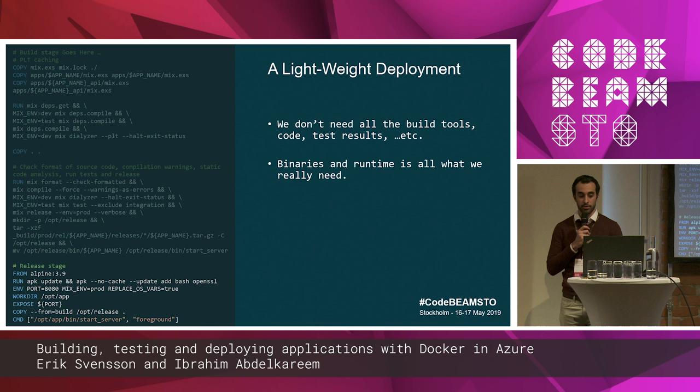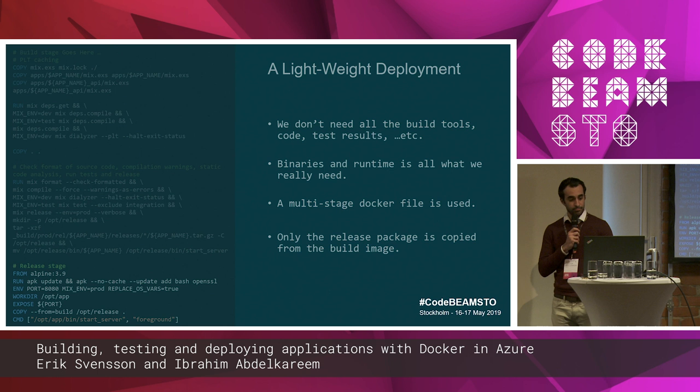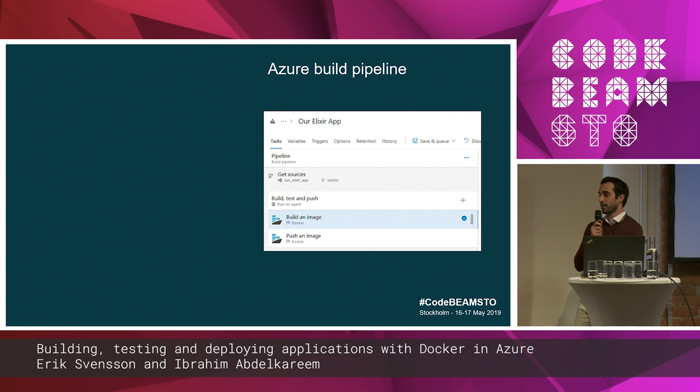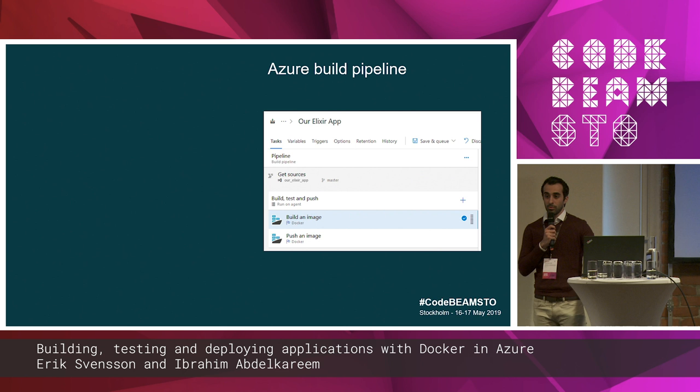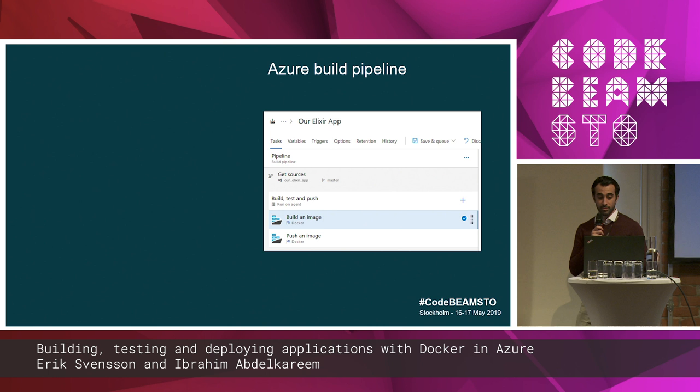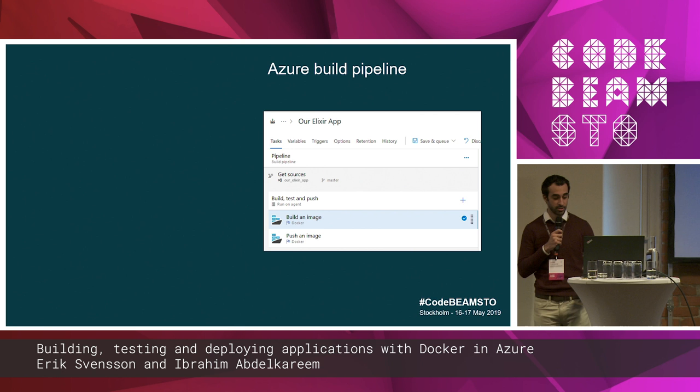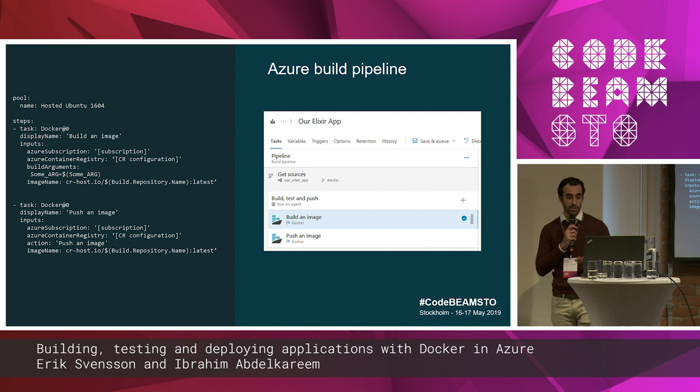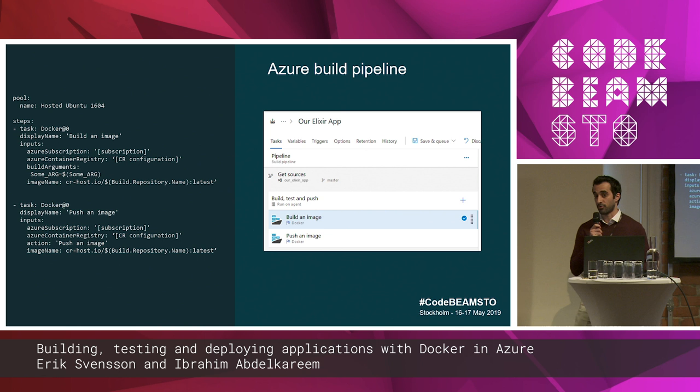Since we're doing everything in the Dockerfile, the Azure DevOps build pipeline becomes as simple as possible. We just have two steps: one building the image and the other pushing the image to our container registry hosted in Azure. The YAML code is simply those two steps — build and push the image if it was successful.